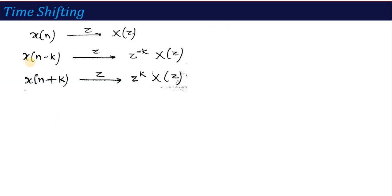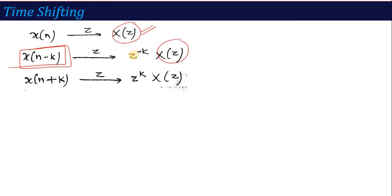This is the Time Reversal property. Next, talking about the Time Shifting property — we studied that time shifting means we apply n-k or n+k to n. So if X(n) has Z-transform X(z), then if you are asked for the Z-transform of x(n-k), just say it is z^(-k) * X(z).